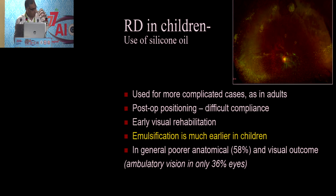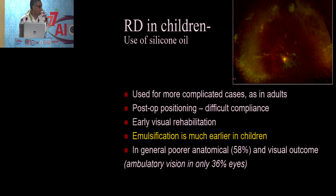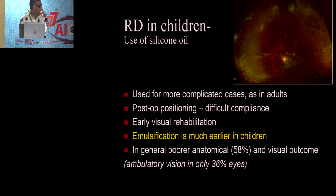Silicone oil is more commonly used in children due to compliance issues with prone positioning. Emulsification occurs much earlier in these eyes. However, despite poor single-surgery anatomical prognosis, combining multiple surgeries results in final outcomes of around 80 to 90%.